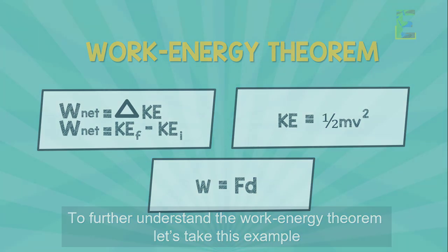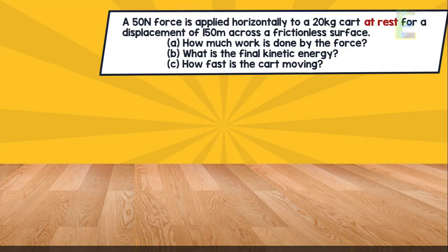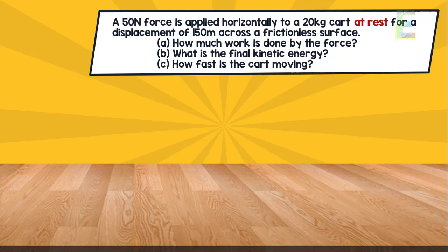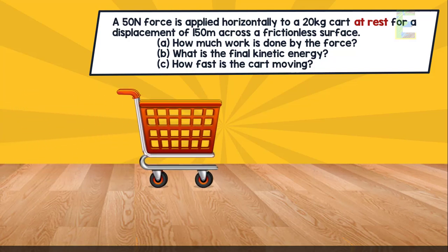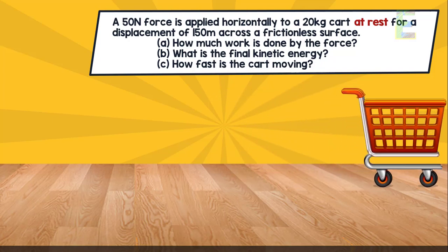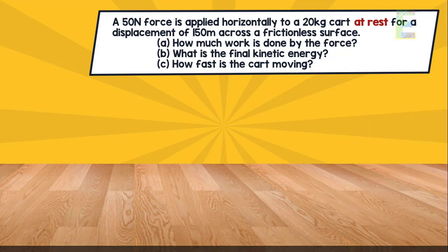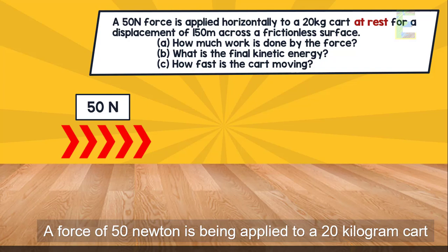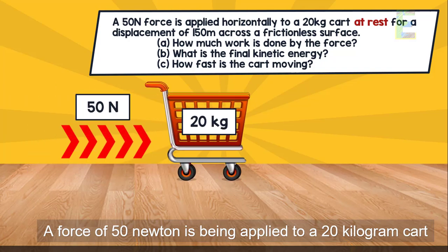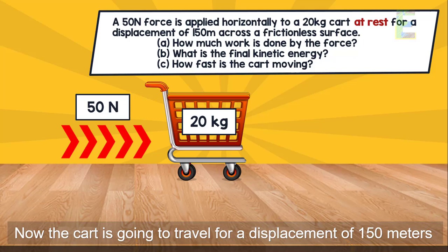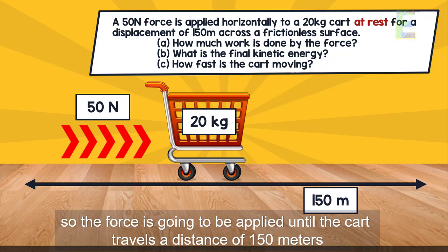To further understand the work-energy theorem, let's take this example: a 50 Newton force is applied horizontally to a 20 kilogram cart at rest for a displacement of 150 meters across a frictionless surface. We need to find: how much work is done by the force, what is the final kinetic energy, and how fast is the cart moving.